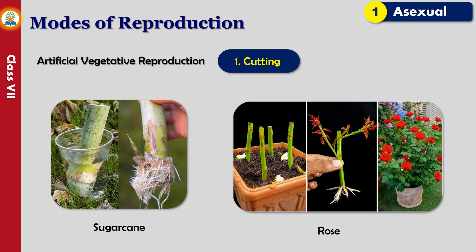In cutting, a piece of shoot, root, or leaf can be used to grow a plant. In plants such as rose and sugarcane, the stem is obliquely cut and planted in the soil. This stem then grows into a new plant.